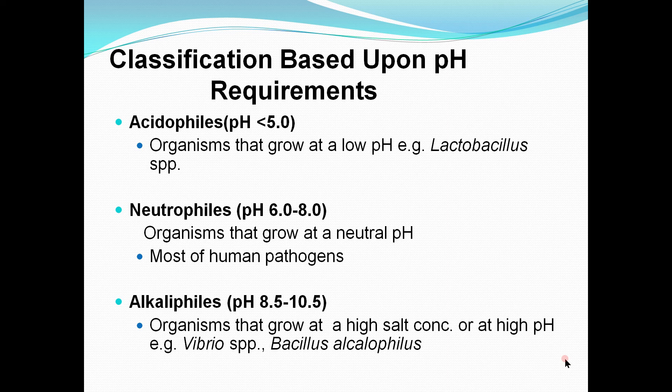The majority of bacteria are neutrophils and grow best at a pH close to seven. Helicobacter pylori is an important example of a neutrophil that lives in the stomach environment, surviving by producing enzymes that neutralize stomach acid. Alkaliphiles grow optimally at a pH ranging between eight to ten and thrive in basic environments such as alkaline soils and lakes — for example, Bacillus species, which can also grow in high salt concentrations.